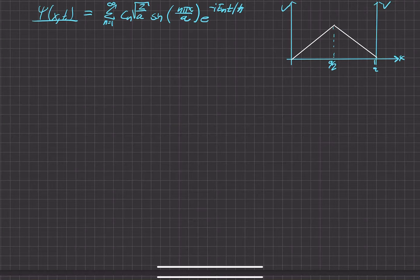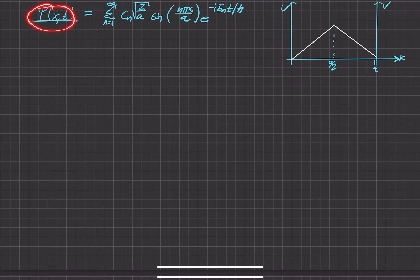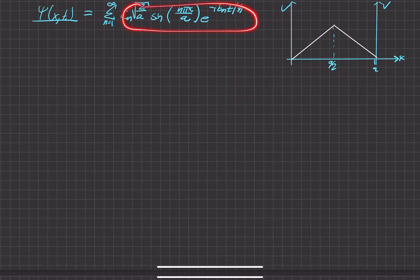Alright, so in this problem we're going to find the full time dependent wave function for this wave function that we have here in this infinite square well. In general, a wave function can be expressed as a linear combination of a bunch of different stationary states here.